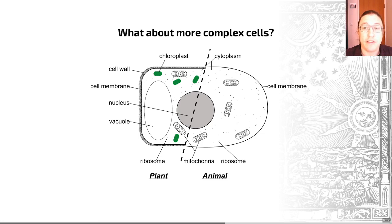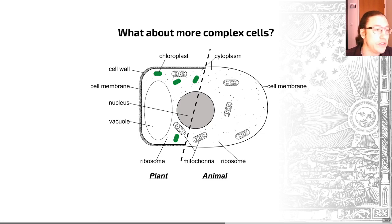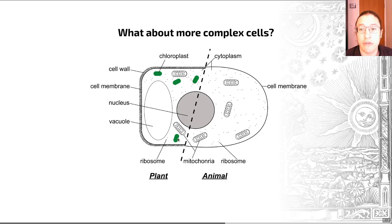This group, the eukaryotes, includes fungi, plants, and animals, but also a whole host of single-celled organisms, including amoebozoa and algae. The cells of eukaryotes tend to be larger than those of prokaryotes — between 10 and 100 microns in size. They possess organelles: membrane-bound structures within the cytoplasm. You can see examples on this slide in both animal and plant cells. Eukaryote cells generally have mitochondria, and plant cells have chloroplasts, which allow them to photosynthesize.